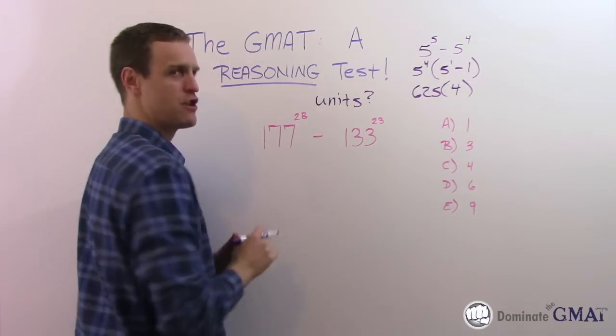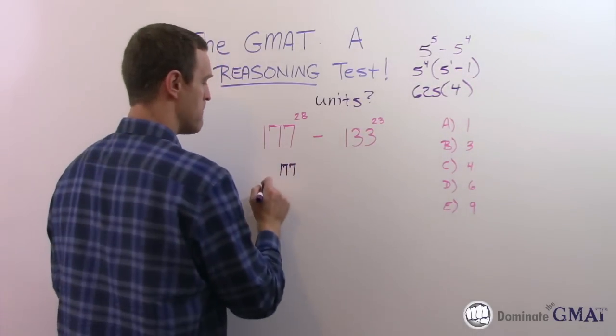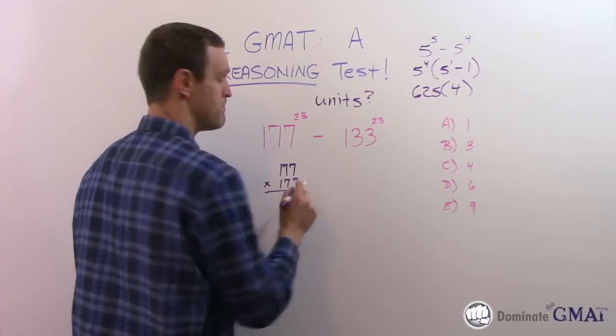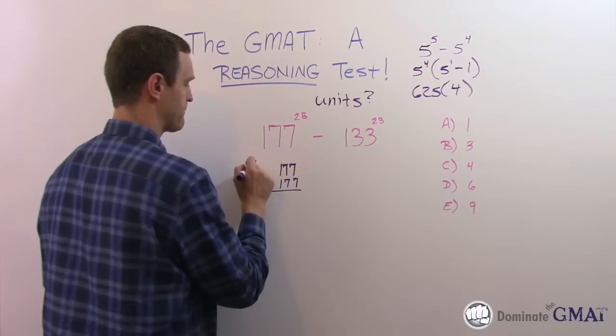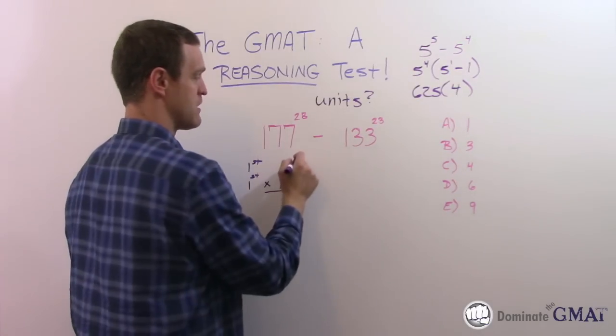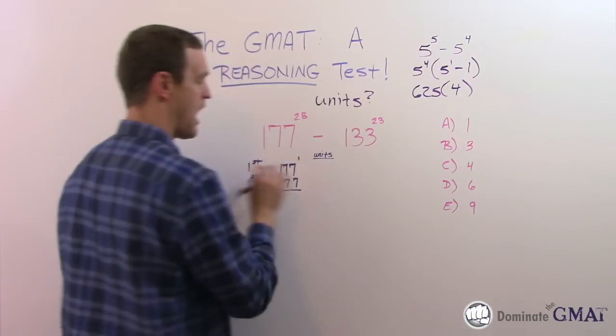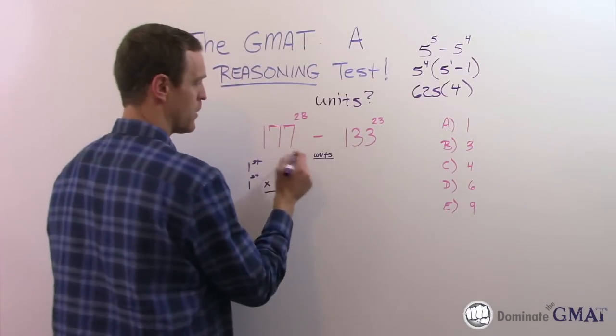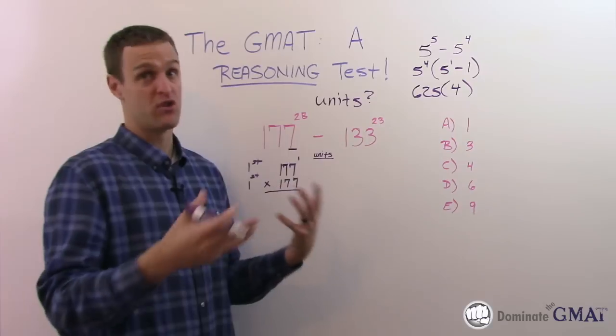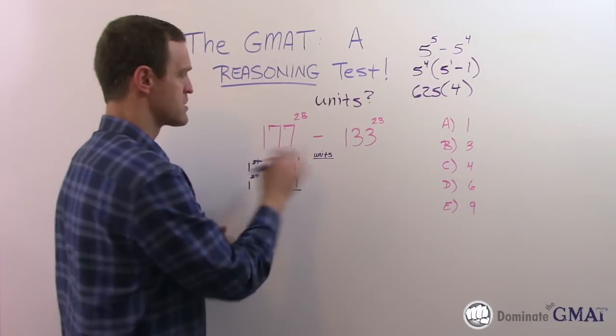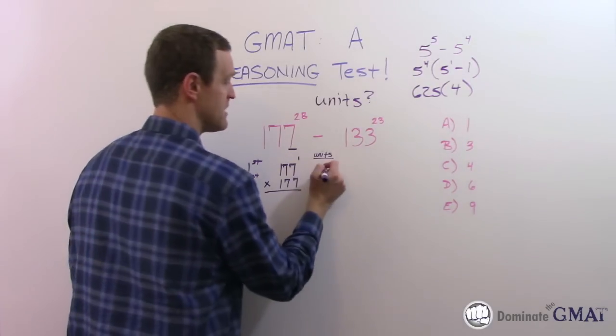Let's start doing something. If I'm going to take 177 to the 28th power, that means I'm taking 177 and multiplying it by itself. The first power is just 177 itself. What's the unit's digit of that? The unit's digit, a math term, is just the last number, the ones digit. For 177 to the first power, the unit's digit is just 7.